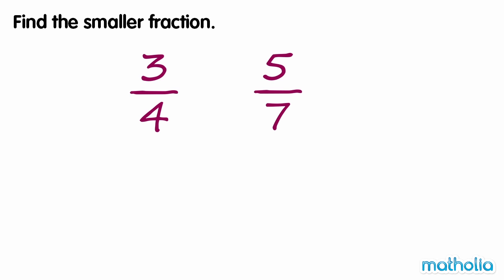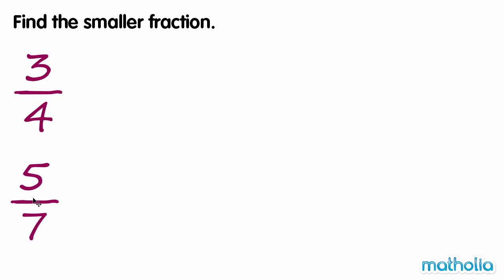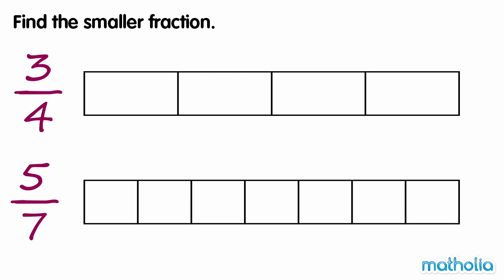Find the smaller fraction. We need to compare three-quarters and five-sevenths. We can show the fractions by drawing two equal rectangles and colouring the correct number of parts.